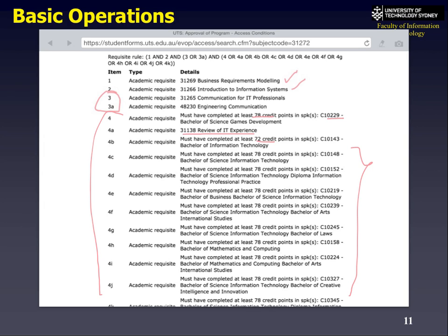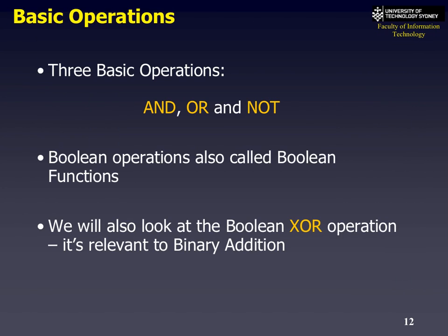Notice the words AND, OR, and NOT. In the English language they mean the same as in logic: AND means both must be true, OR means one or the other is true, and NOT means the opposite. These are called Boolean functions. There's one more operation we'll look at later called the XOR, or exclusive OR — also known as the English OR.